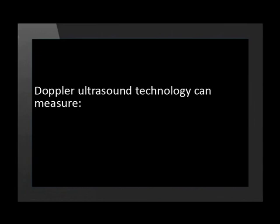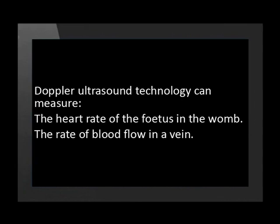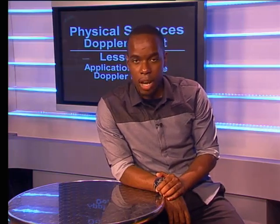Doctors can use Doppler ultrasound to measure the heart rate of a fetus in the womb or the rate of blood flow in a vein. In Doppler ultrasound, the blood is the source of the reflected sound. The blood is moving, and so the ultrasound has a different frequency when it is received than when it is transmitted. Note that Doppler ultrasound is not the same as a normal ultrasound scan that produces a reflected image of a baby in the womb.